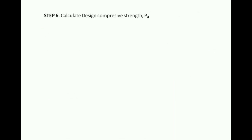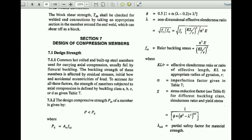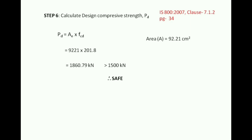Step 6 is to calculate the design compressive strength Pd from IS 800:2007 Clause 7.1.2, page 34. The clause states Pd = Ae × fcd. The effective area Ae = 92.21 cm² (from the steel table) and fcd = 201.8 N/mm². Therefore, Pd = 92.21 × 100 × 201.8 = 1860.79 kN, which is greater than the applied load of 1500 kN. Hence the section is safe.